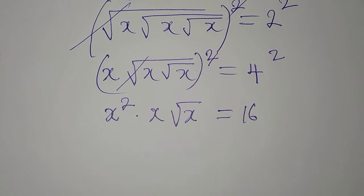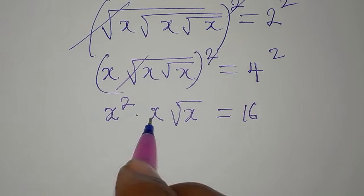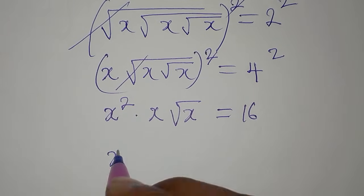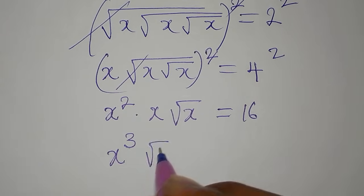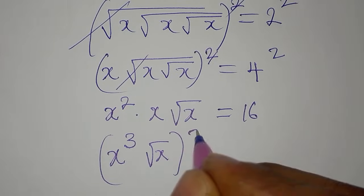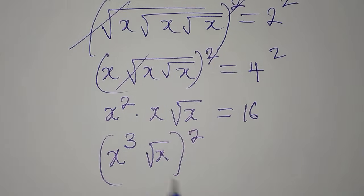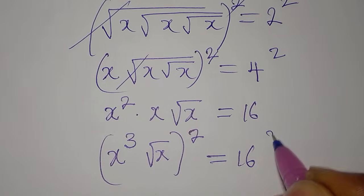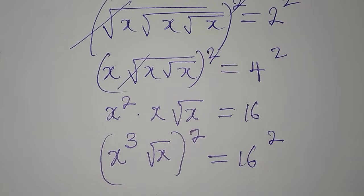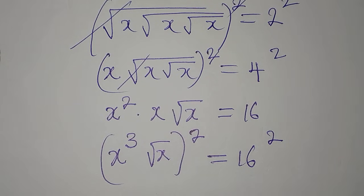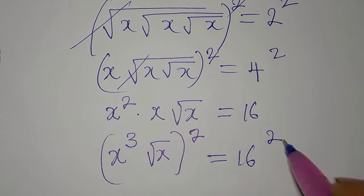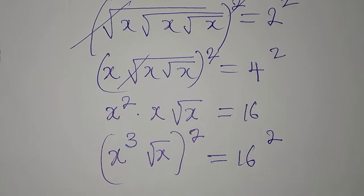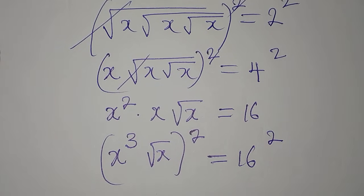Next, I'll multiply the terms outside the root. We get x to the power of 3, then we still have root x, which I'm going to square again. This equals 16 squared. Now, what is 16 squared? 16 squared is 256.